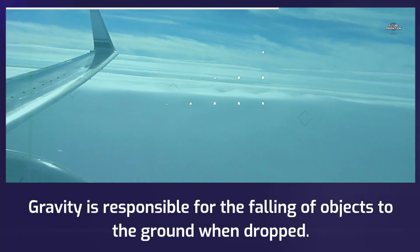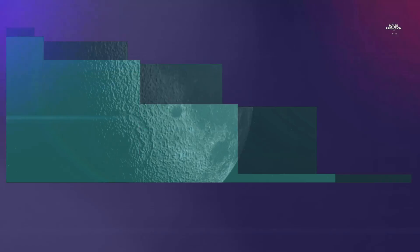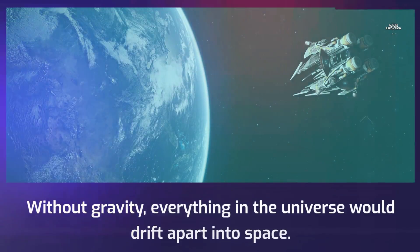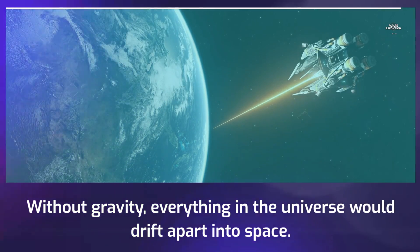Gravity is responsible for the falling of objects to the ground when dropped. It keeps the moon in orbit around the earth and the earth in orbit around the sun. Without gravity, everything in the universe would drift apart into space.